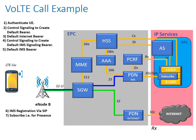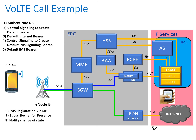We can now subscribe for presence within the network. This will notify our friends and colleagues that we're on the network and the type of device we have available for connectivity. It also works in reverse: if one of our friends or colleagues arrives onto the network, we'll get a notification indicating the type of device they have and that they're present on the network for communication.